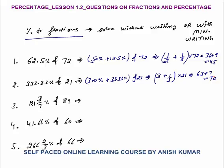Third is 21 3/7%. Now we know that 1/14 — in the first lesson, 1/14 was 7 1/7%. So 3/14 would be 21 3/7%. So this will be equal to 3/14 of 84 — of means multiply. Now 14 × 6 = 84; 6 × 3 = 18, which will be your final answer.